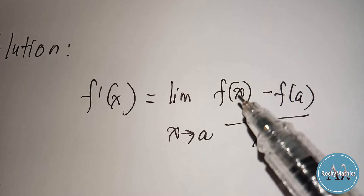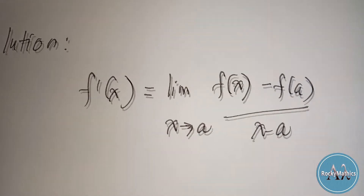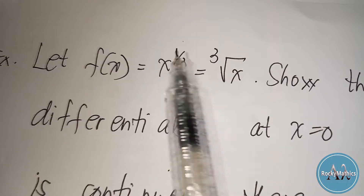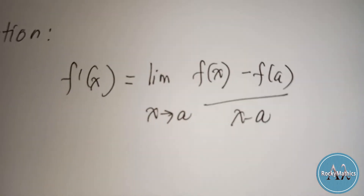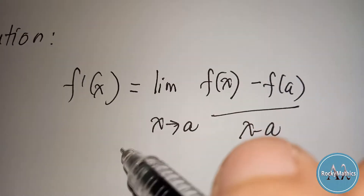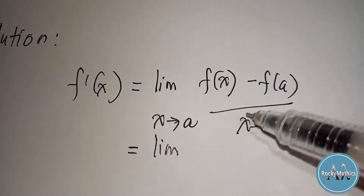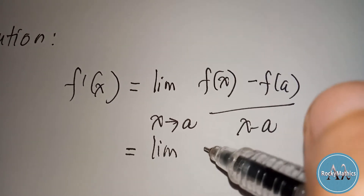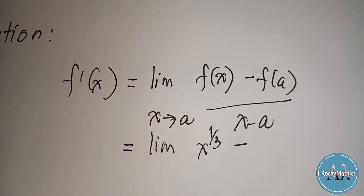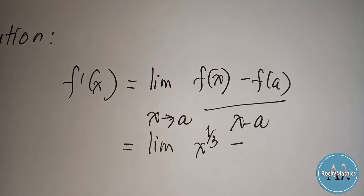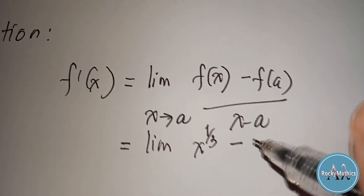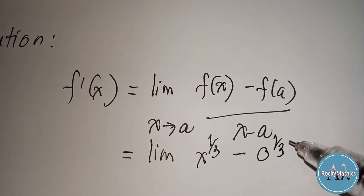This formula is easier compared to the first one since it doesn't involve h. If we used the first formula, we would need to add h to the expression, which becomes complicated. So following this formula: the limit of f(x) minus f(a) over x minus a — our f(x) is x raised to one-third, and since we are checking at x = 0, the value of a is zero, so f(a) = f(0) = 0 raised to one-third.